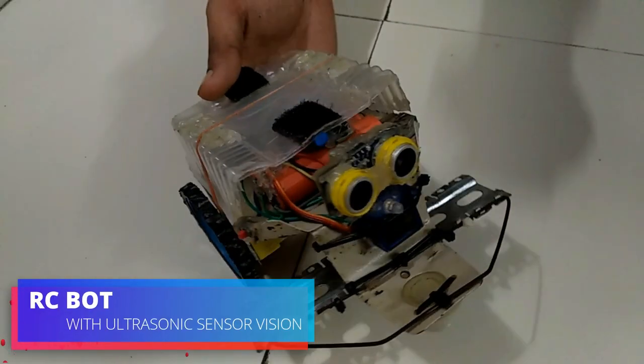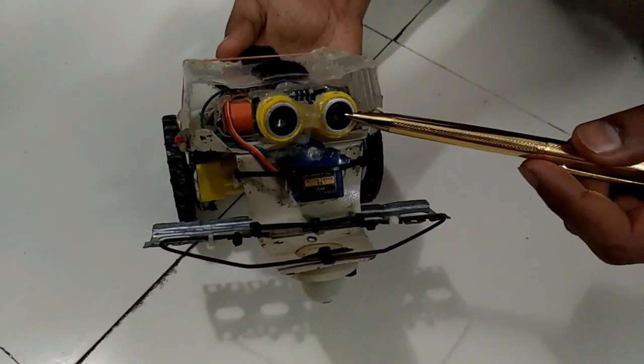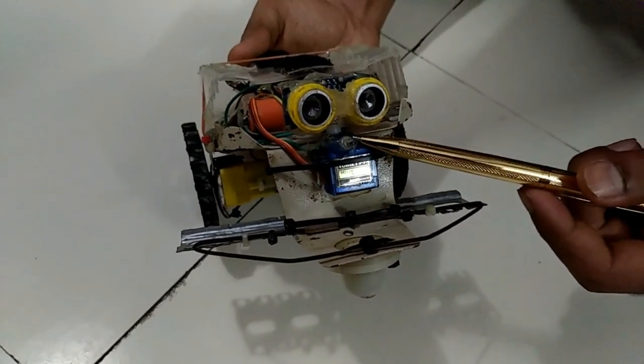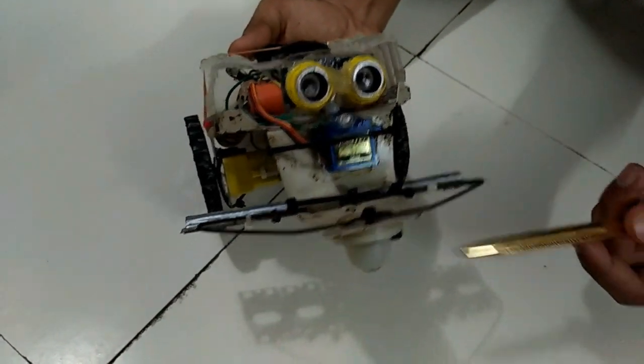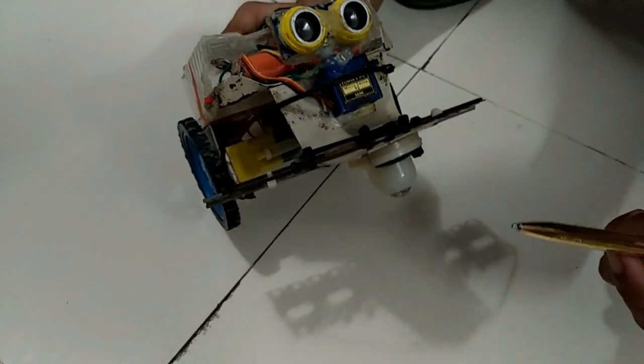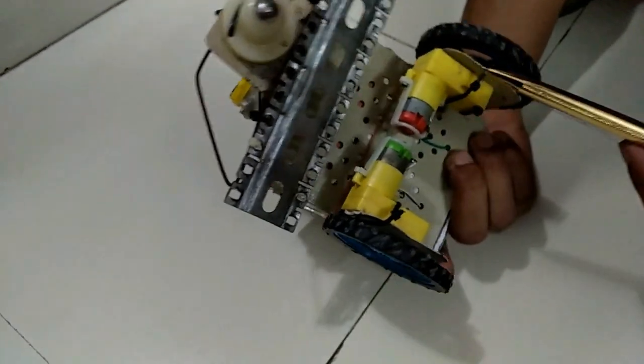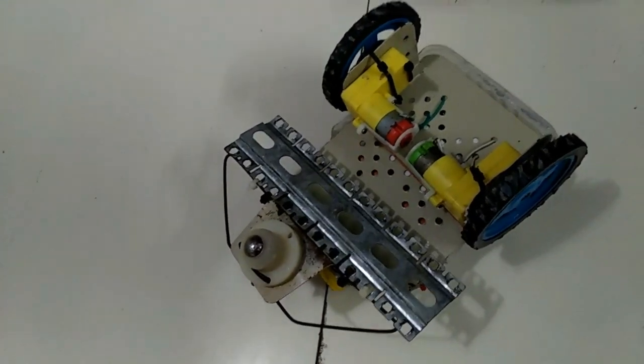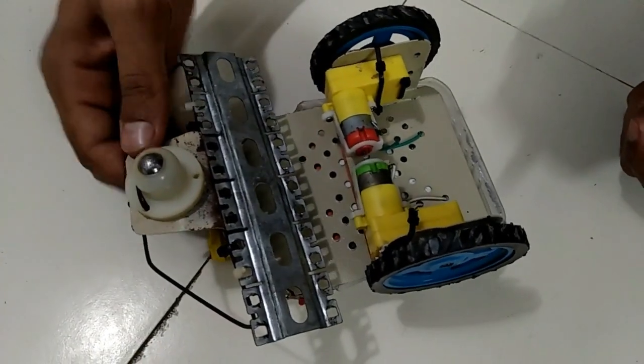Now coming to the most important part that is the RC bot. This is the ultrasonic sensor, servo, and LED. This is the frame. Two BO motors. A caster wheel. This is how it looks from the bottom.